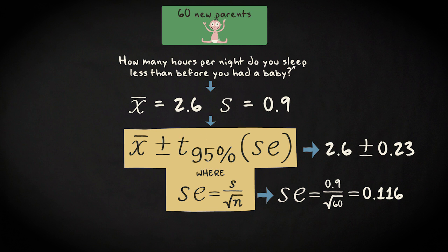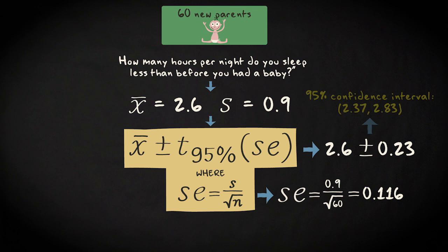We subtract this value from our sample mean of 2.6 and also add it to the mean. That gives us the interval endpoints 2.37 and 2.83. The 95% confidence interval goes from 2.37 to 2.83. We have 95% confidence that this interval contains the actual population mean.